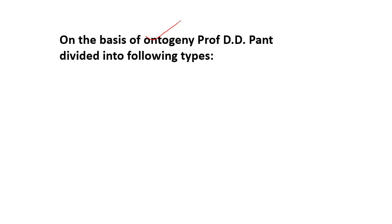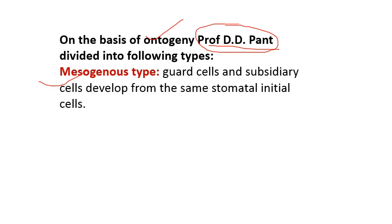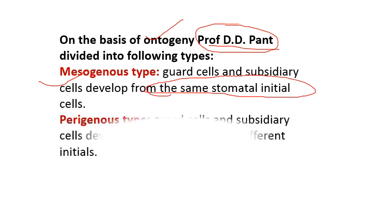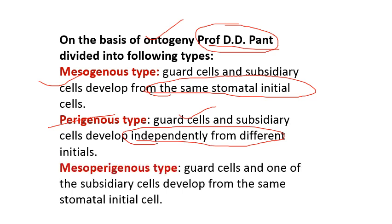Professor D.D. Pant classified stomata on the basis of ontogeny (developmental stages). Mesogenous type: guard cells and subsidiary cells develop from the same stomatal initial. Perigenous type: guard cells and subsidiary cells develop independently from different initials. Mesoperigenous type: guard cells and one of the subsidiary cells develop from the same stomatal initial, while other subsidiary cells arise independently.